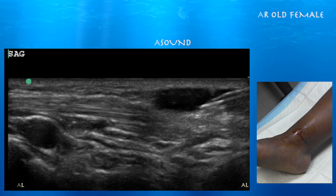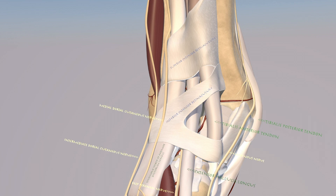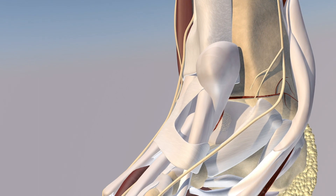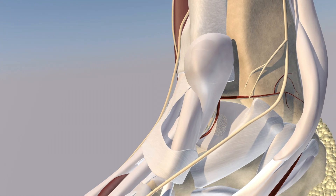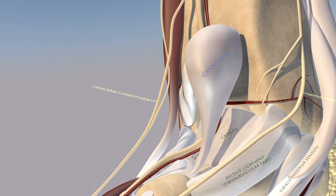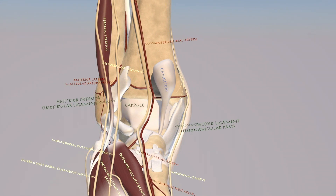We're going to go over a ganglion aspiration just above the ankle joint. Here we can see some of the anatomy — the outline of the anterior ankle. Now we're turning towards the medial ankle where we can see a fairly sizable ganglion cyst just medial to the tibialis anterior tendon, extending proximally, with much of the cyst proximal to the tibiotalar joint. The stalk of this ganglion is essentially between the navicular and the medial cuneiform bone.